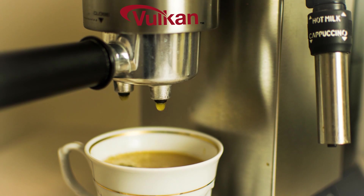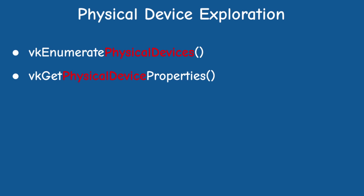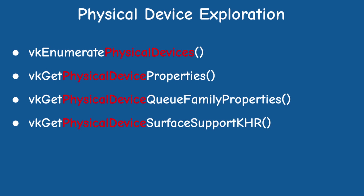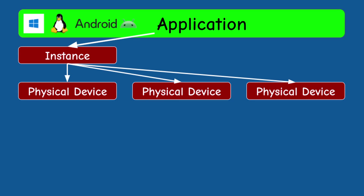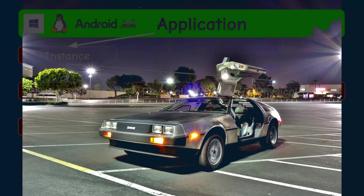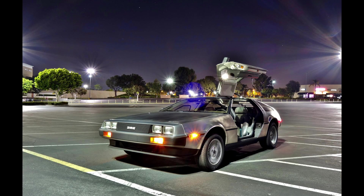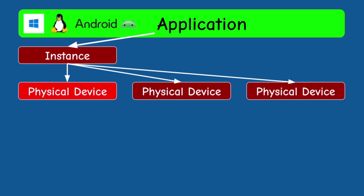They sure got some crazy espresso machines down there in Italy. The Vulkan API provides a set of functions for enumerating the physical devices and exploring their properties and capabilities. This is important because the next step is to create a logical device, which is a software abstraction of the physical device and will be used for the actual work — but that's for the next video. Today we will learn how to scan these devices and choose one of them, if there is more than one, to be used for rendering.